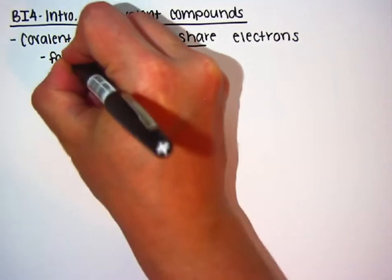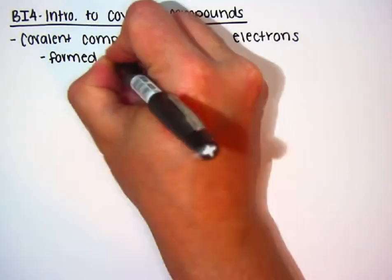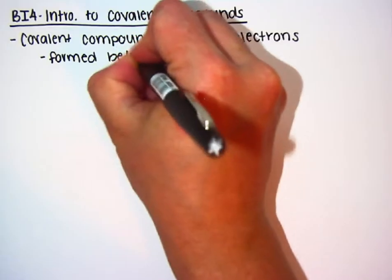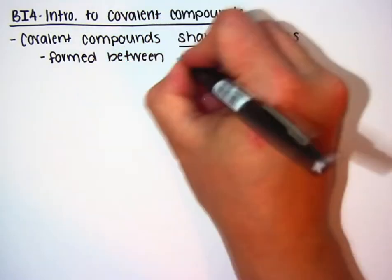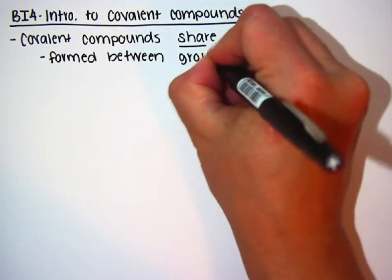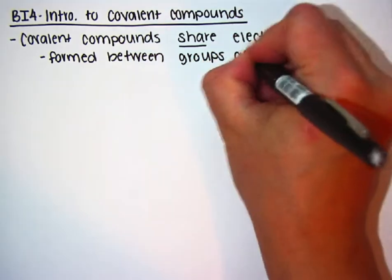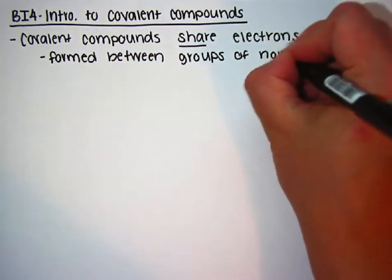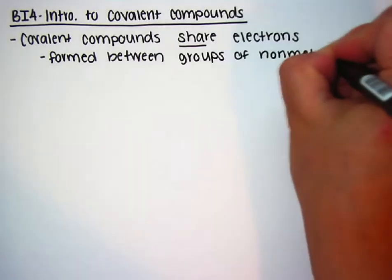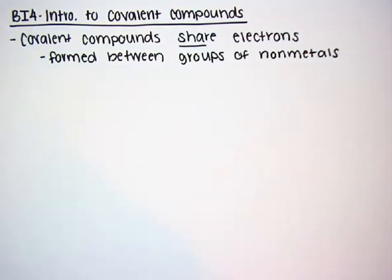Covalent compounds are going to be formed between groups of non-metals. That is another big difference between ionic and covalent. Ionic compounds are formed between one metal and one non-metal. Covalent compounds are going to be formed between groups of non-metals.